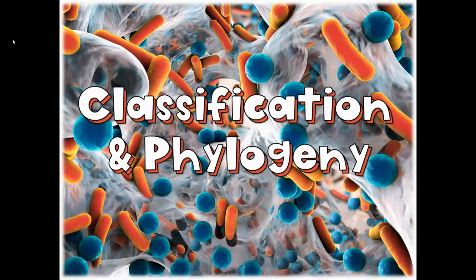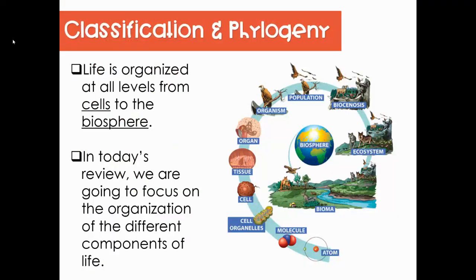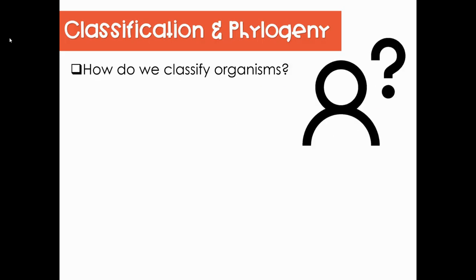Welcome to today's biology review. Today we are focused on classification and phylogeny. We've seen this picture many times in our biology lessons and reviews, but I'm going to explain it one more time because it's a great picture that shows all of biology wrapped into one illustration. Life is organized at all levels, from the smallest unit of life, which includes cells, all the way to the most complex part of our earth, which we call the biosphere. In today's review, we're going to focus on the organization and the different components of life.